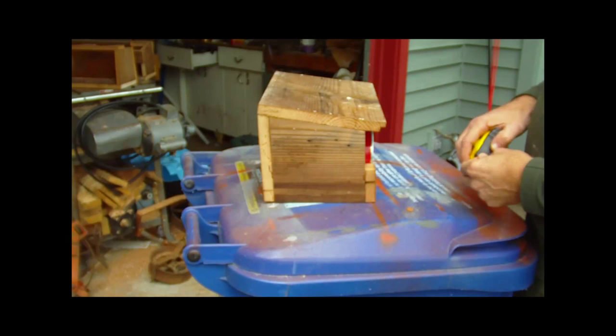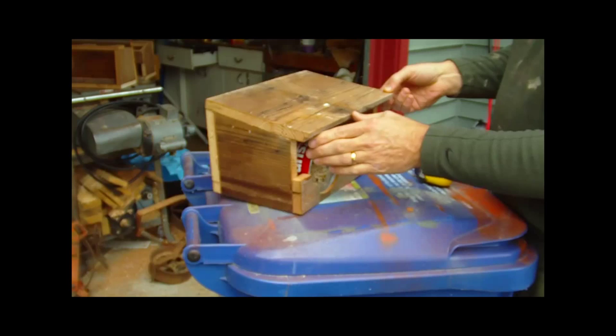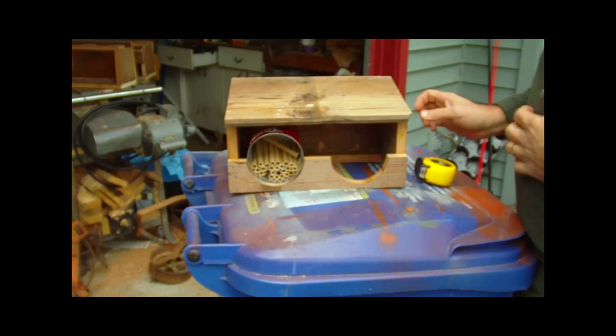You can also see on this side that there is a bit of an overhang here as well, again to keep moisture out. This should be placed under an eave so that it won't get wet.